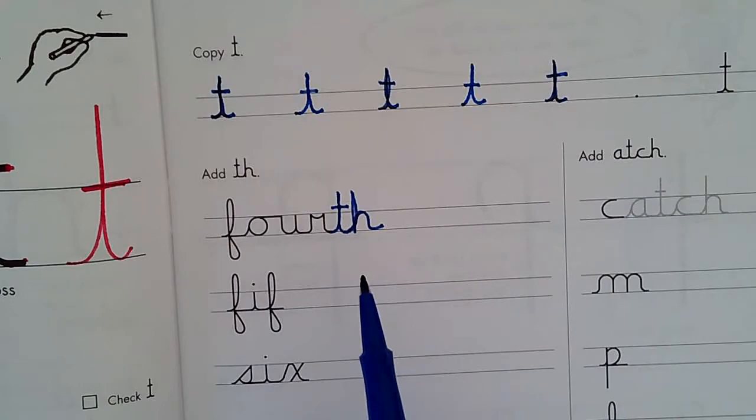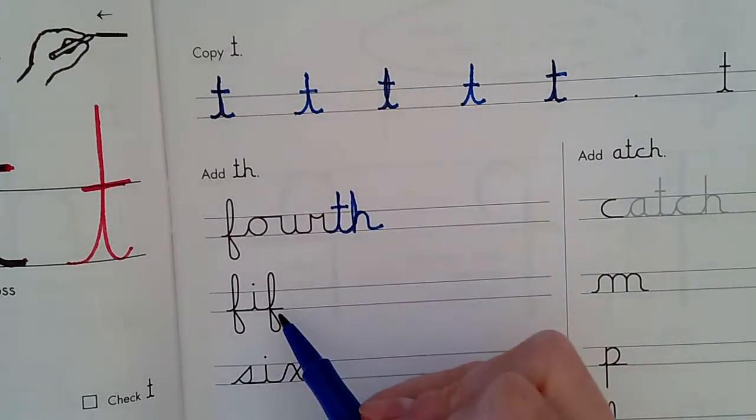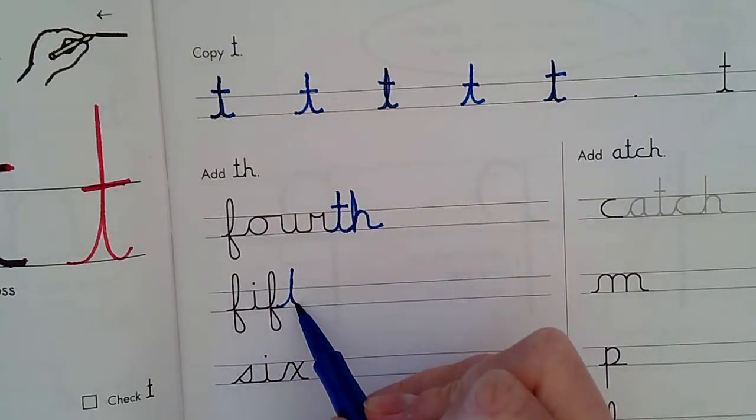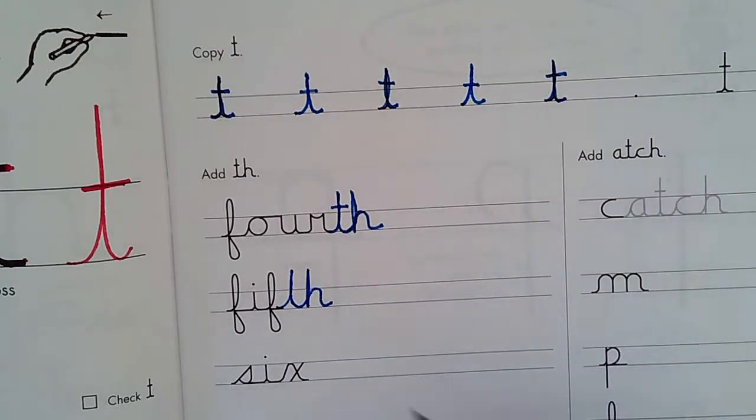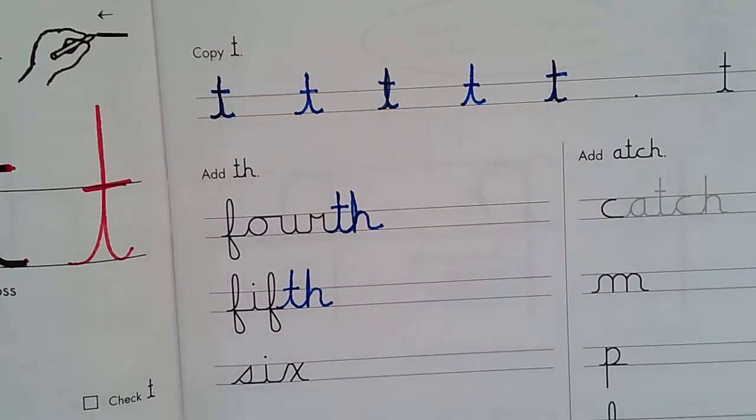Like when we do the calendar, the fourth day of October. And here I see F-I-F. So I'm going to add the T, go straight up again and straight down and make my hump for the H. And then when I'm done with my H I go back and cross my T. And now that says fifth, like the fifth day of October.